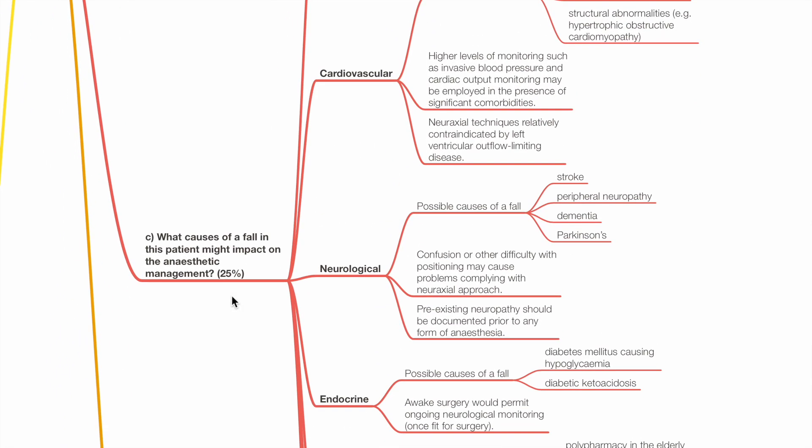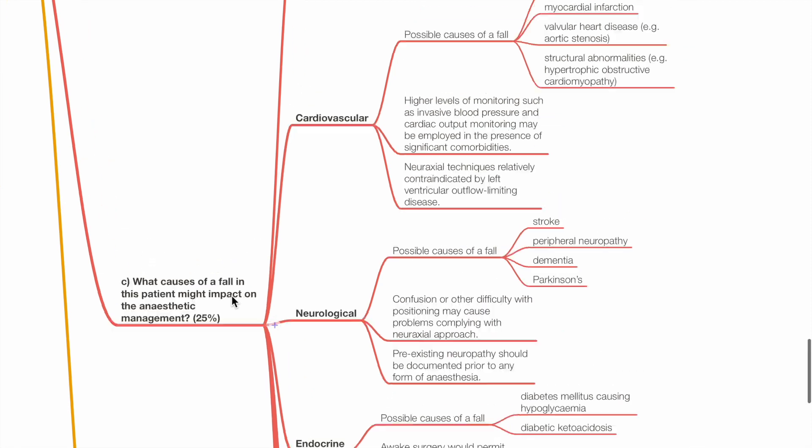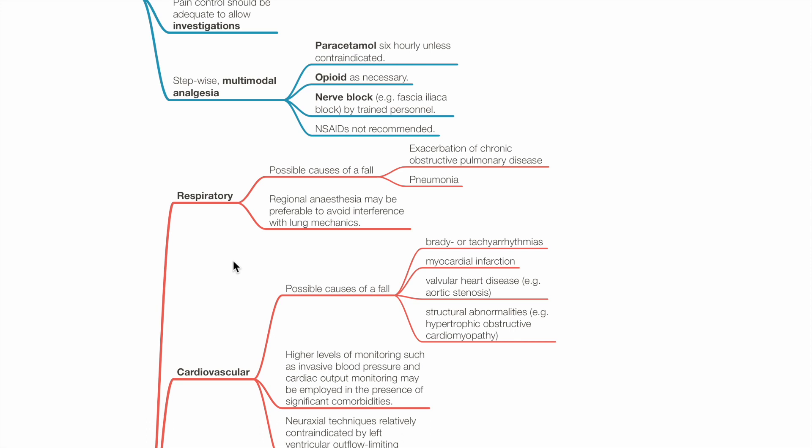C. What causes of a fall in this patient might impact on the anesthetic management? Respiratory. Possible causes of a fall includes exacerbation of chronic obstructive pulmonary disease and pneumonia. Regional anesthesia may be preferable to avoid interference with lung mechanics.